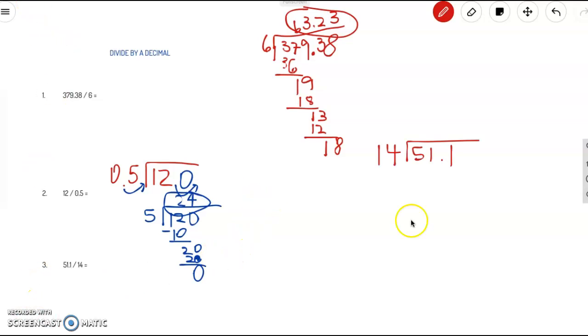Let's go ahead and do number 3. So 14 goes into 51, 3 times. 3 times 14 is 42. Can't subtract 2 from 1, so we got to borrow. This becomes 11 and that becomes 4. 11 minus 2 is 9.